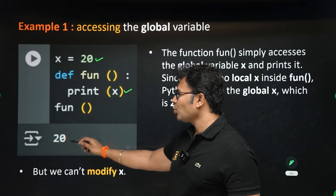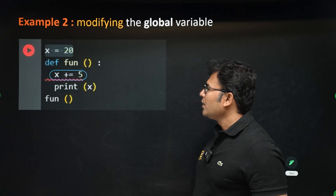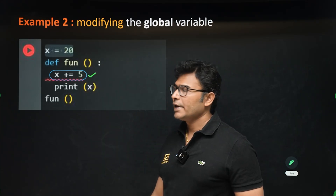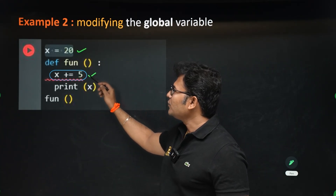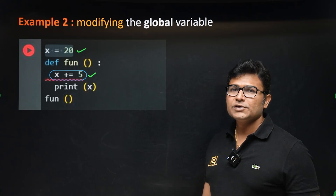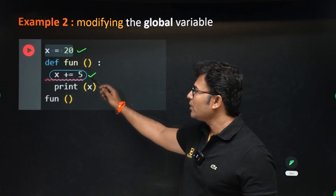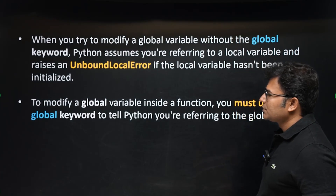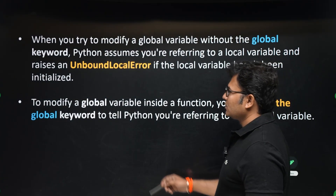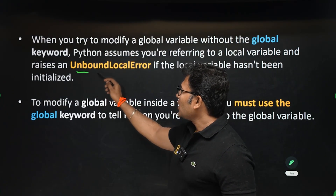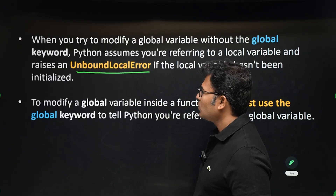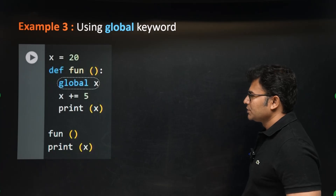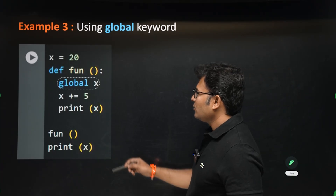Accessing a global variable inside a function doesn't create any problem. But if you try to change the value of x — which is a global variable — it is not allowed. You will get an error called UnboundLocalError. So you have to use the global keyword.